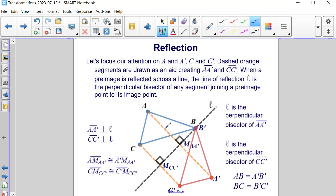So, segment A to the midpoint of A to A prime is congruent to the segment from that midpoint to A prime. So, these two halves are equal to one another.